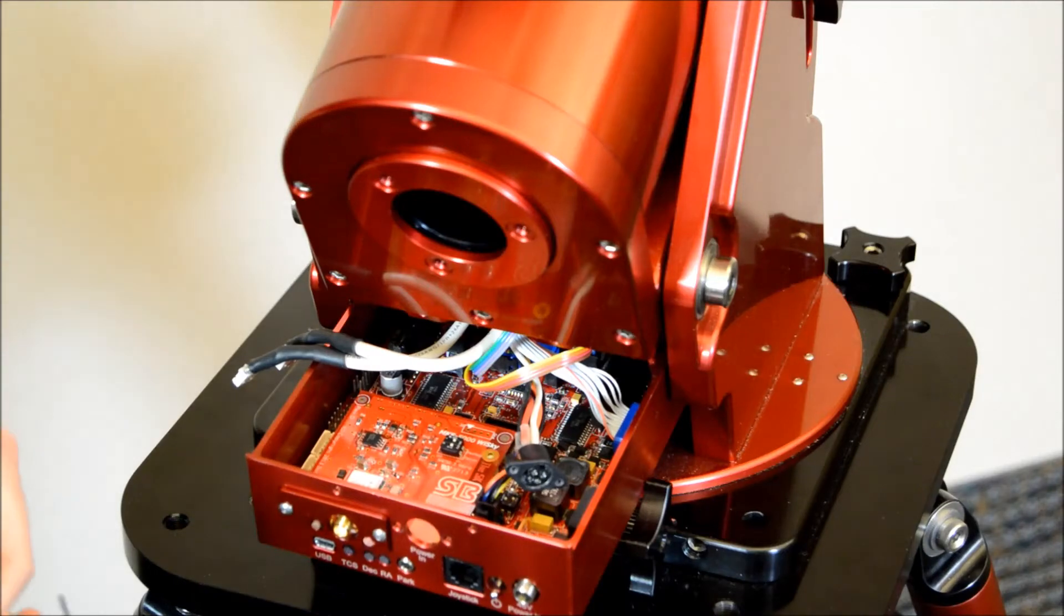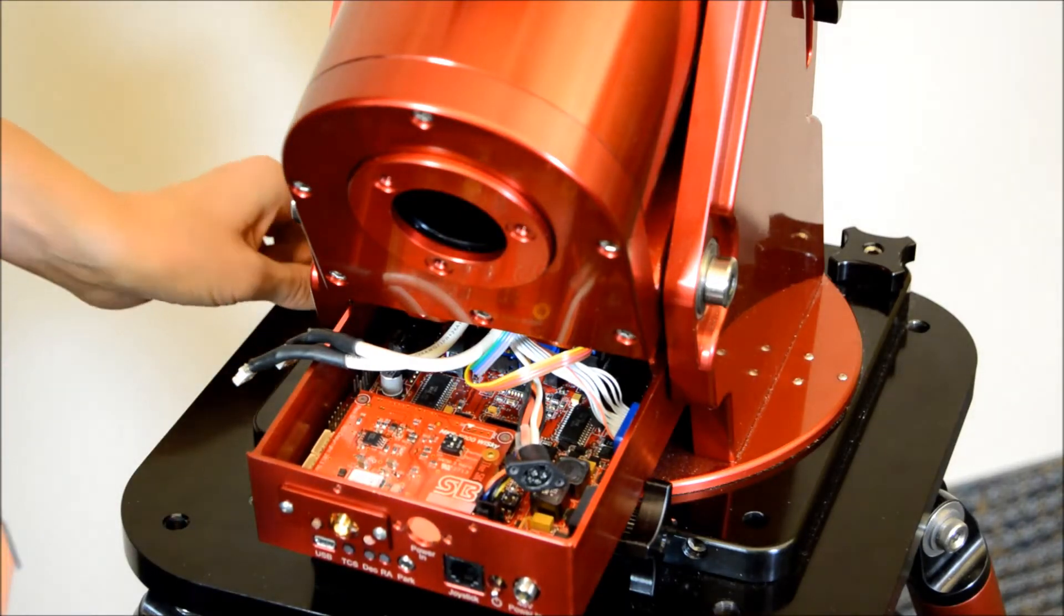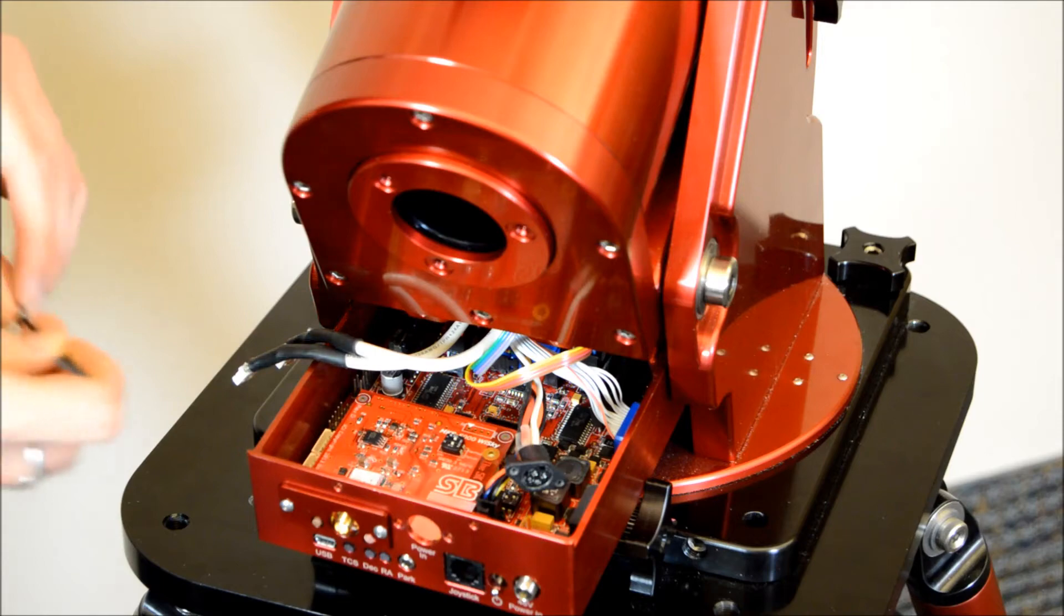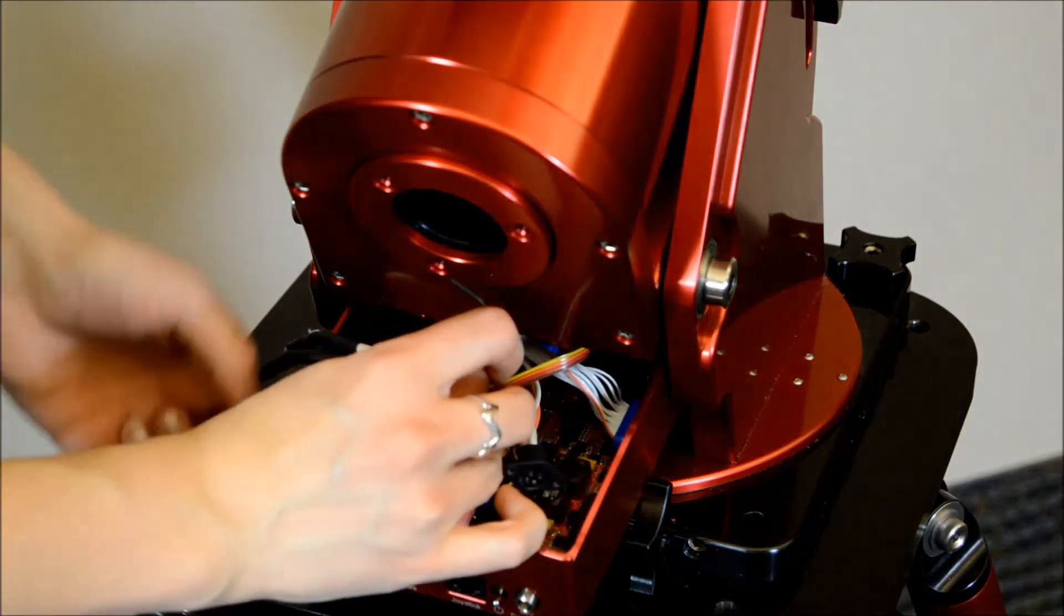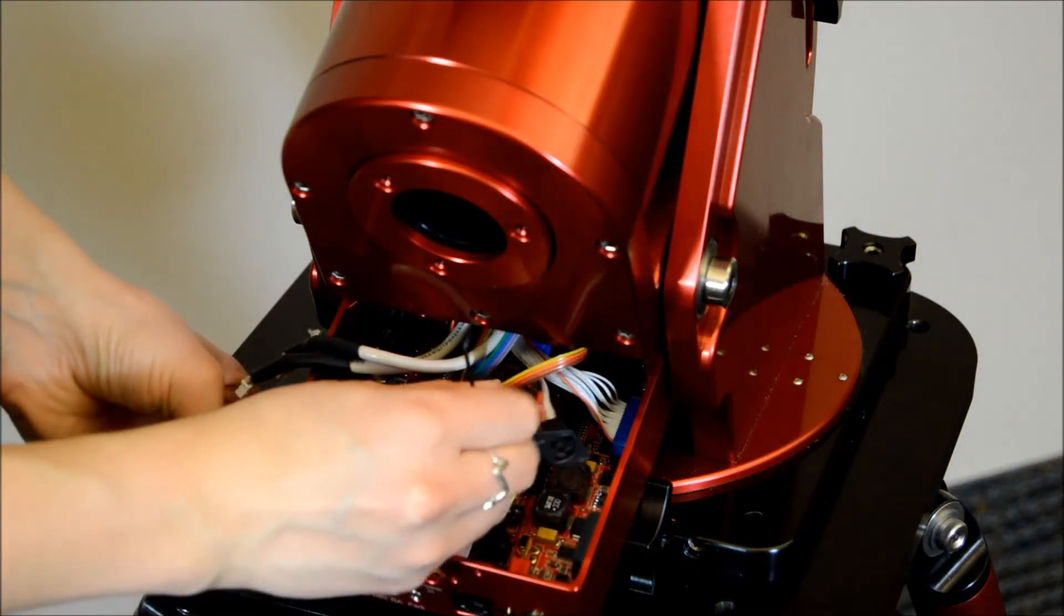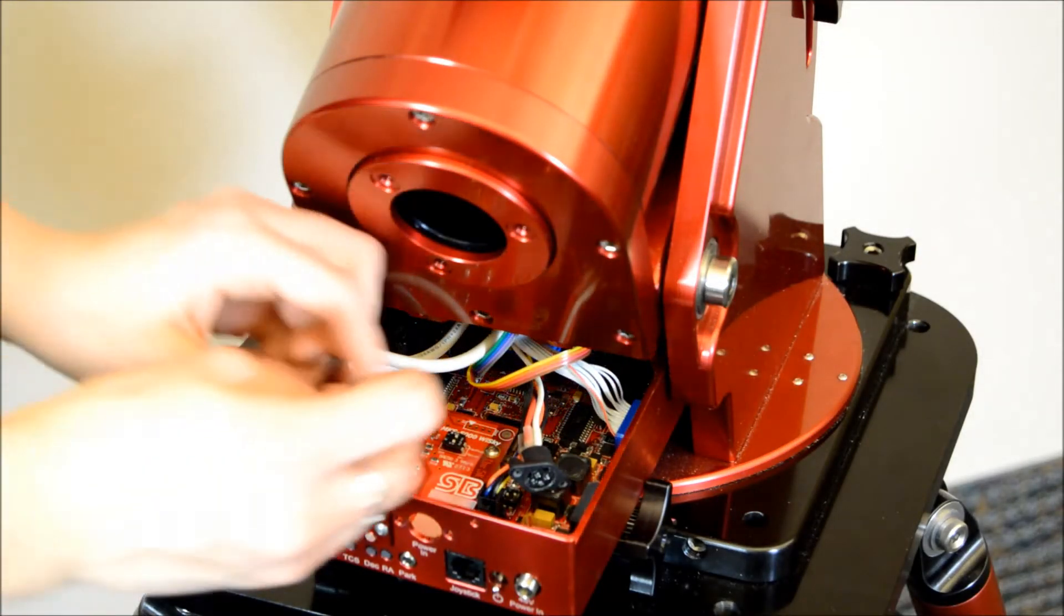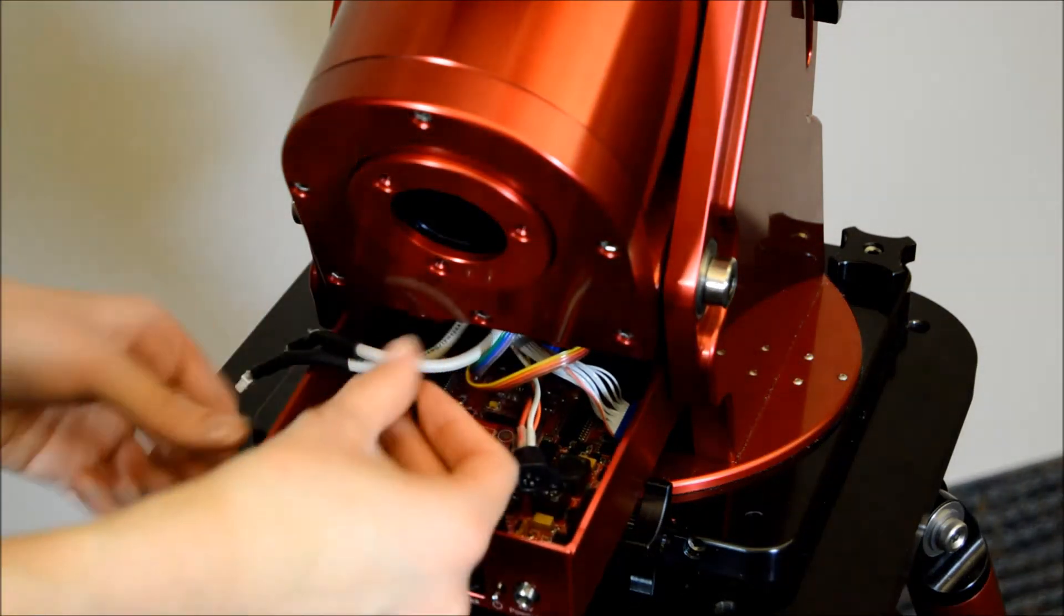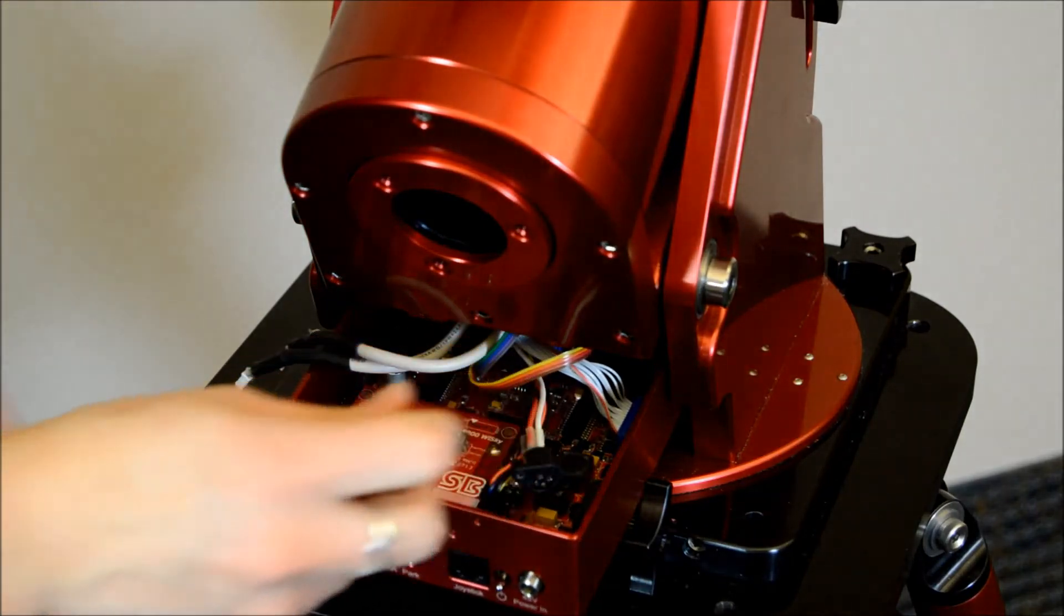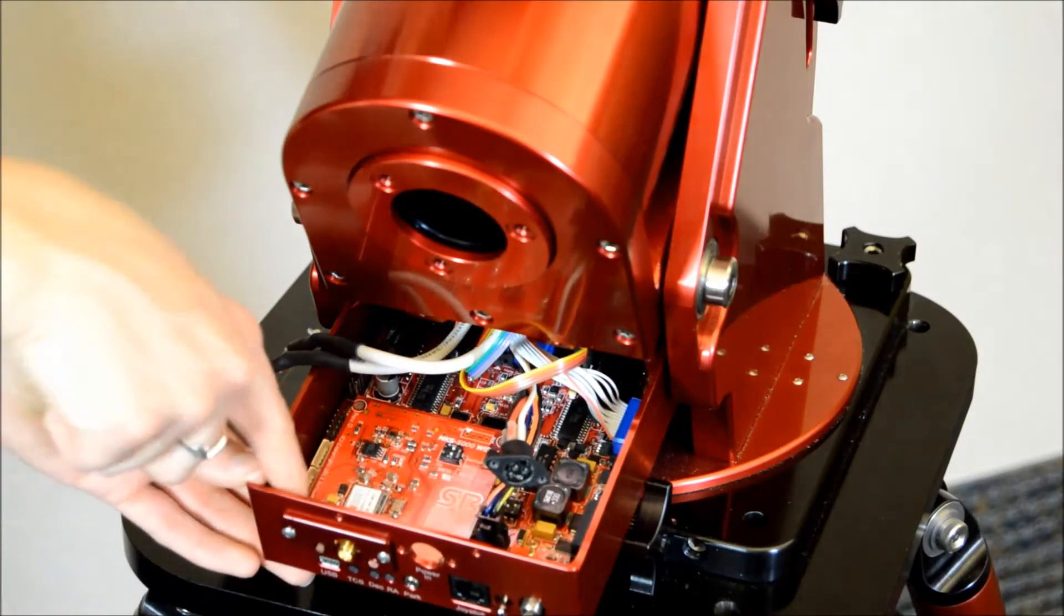Now, the three 4-40 by 3/16 button heads that you removed from the board now get put into here to seat down this YSKY board. I think I lost my last little button head so it goes here.